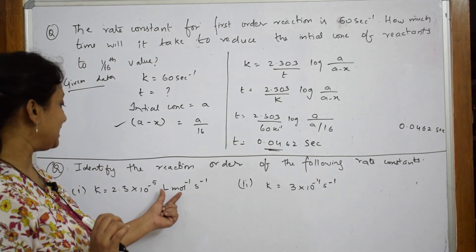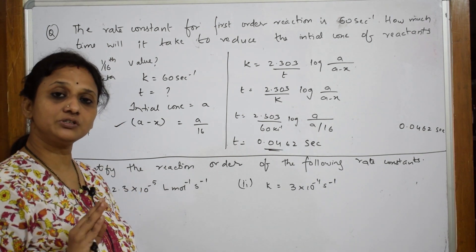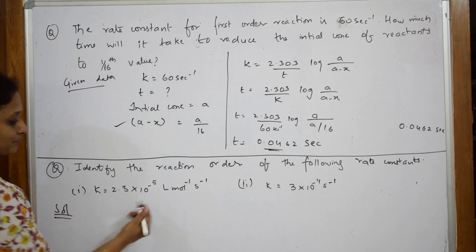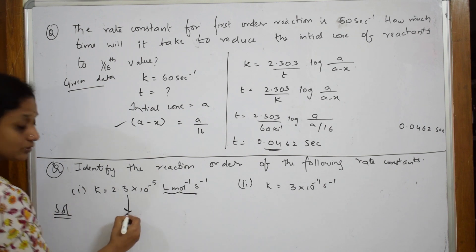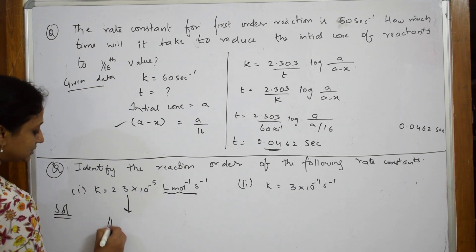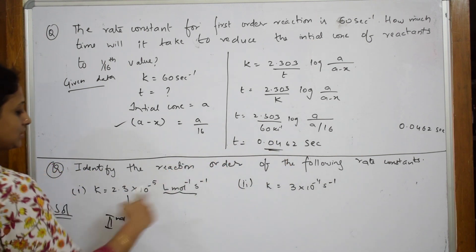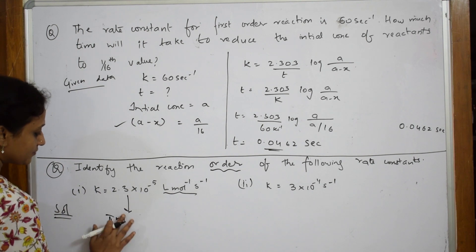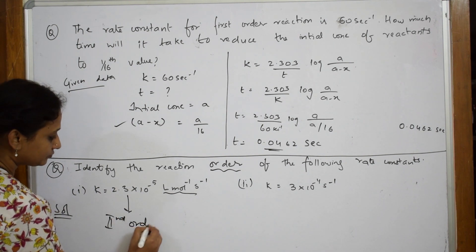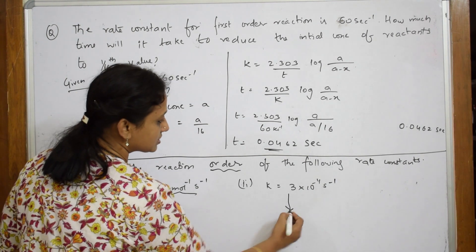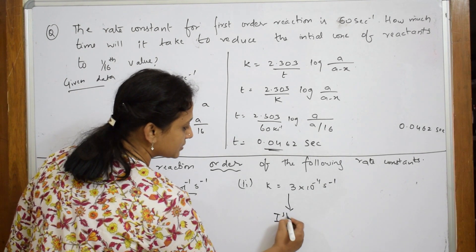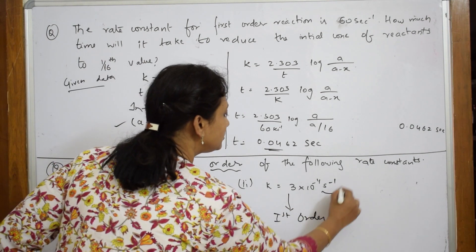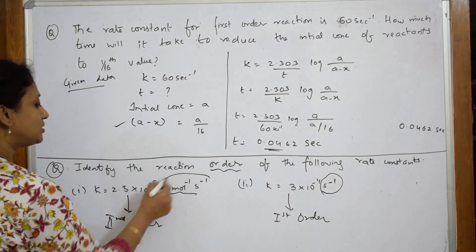Second inverse is the unit for the first order reaction, and liter mole inverse second inverse (L mol⁻¹ s⁻¹) is the unit for the second order rate equation. When they ask you to identify the order, you remember the units. According to the unit, this particular one is second order. The other one — that rate constant unit corresponds to first order. See the unit and write the order.